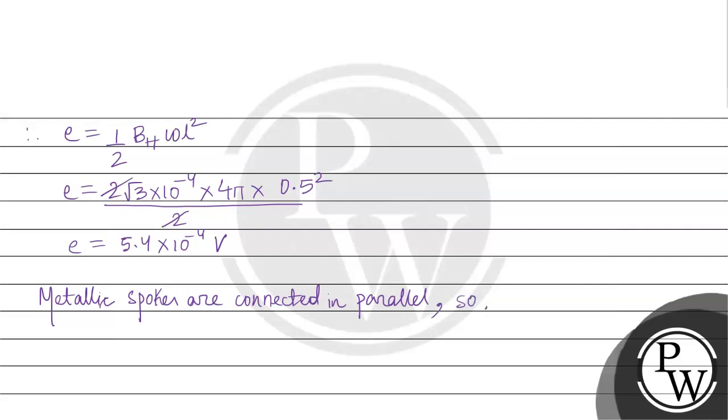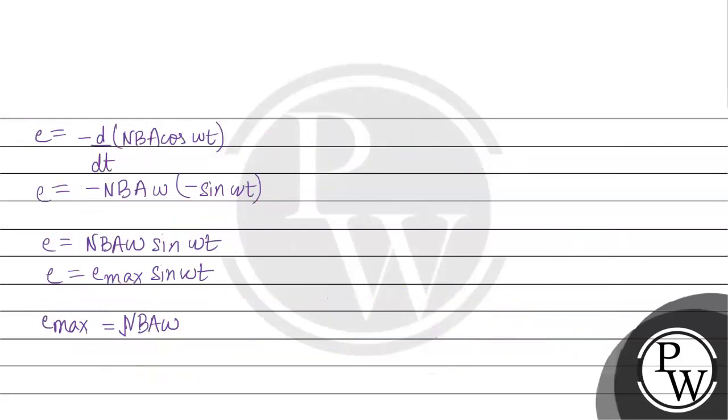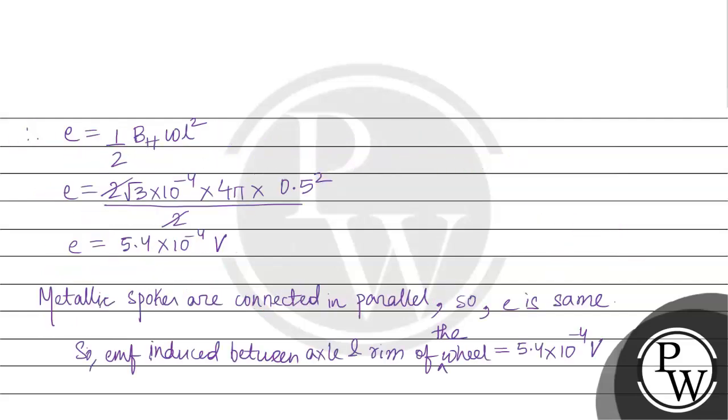Metallic spokes are connected in parallel, so EMF is same throughout. EMF induced between axle and rim is equal to 5.4 times 10 to the minus 4 volts. In this way, the final answer for the first part is the derivation and the final answer for the second part is this.